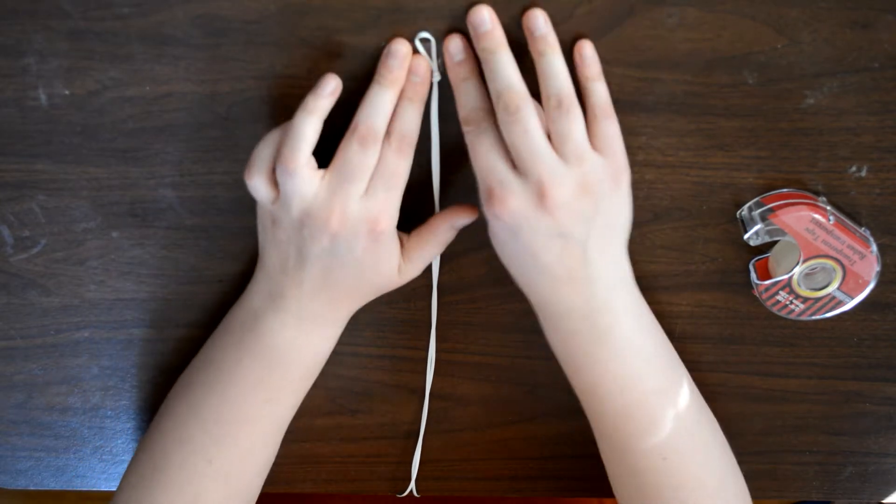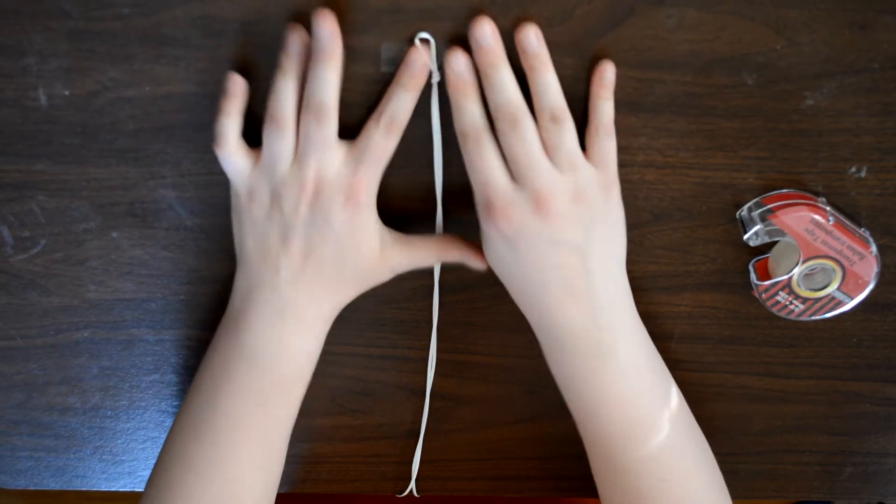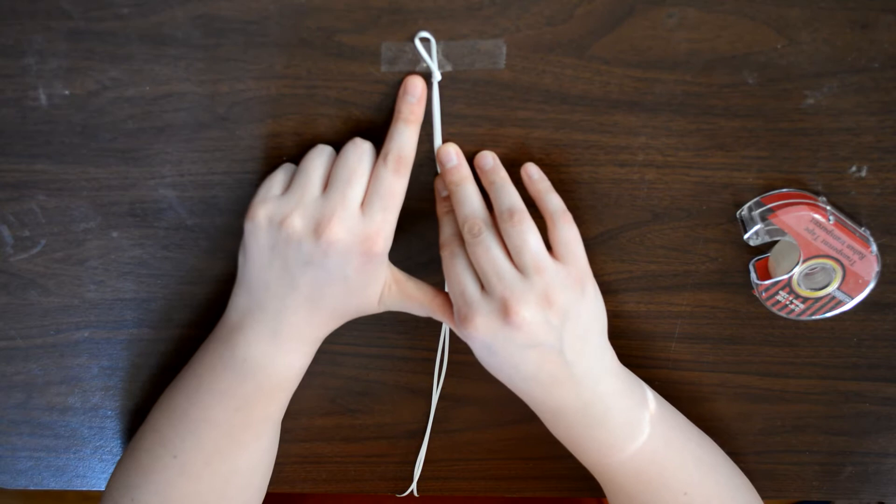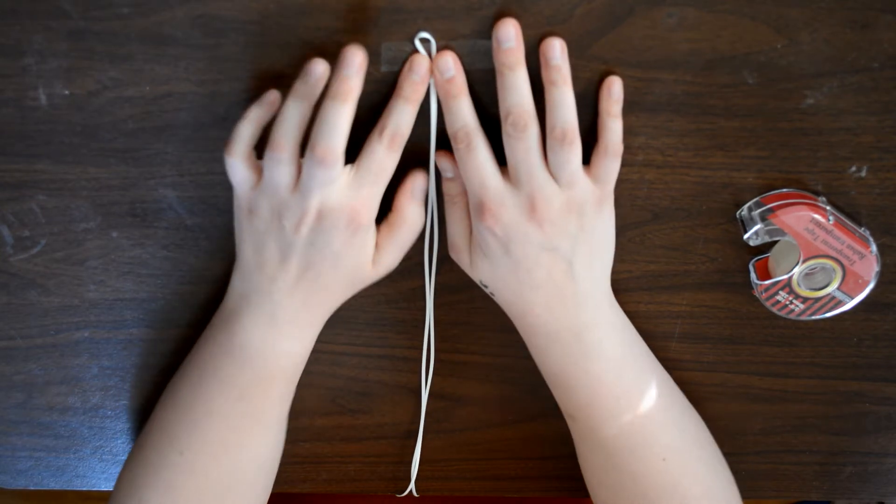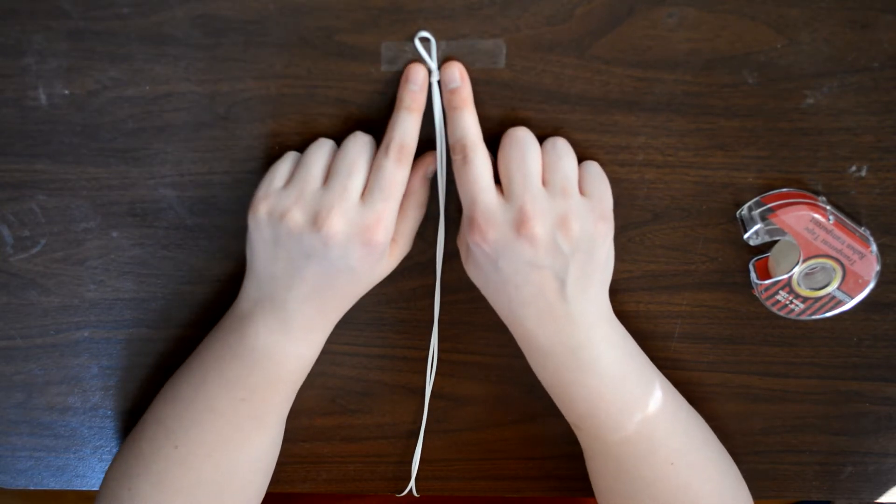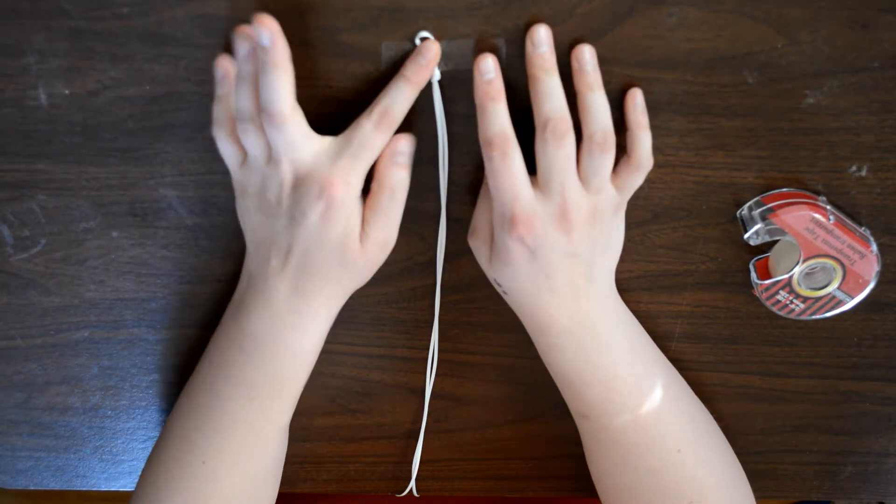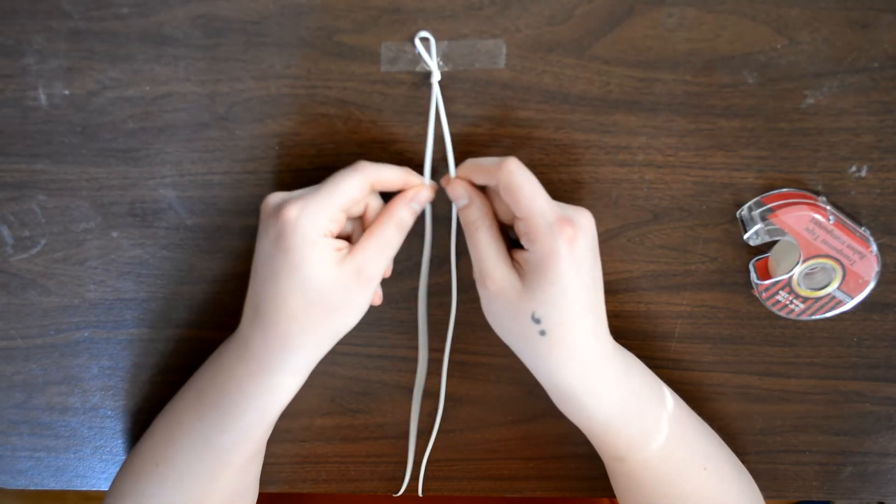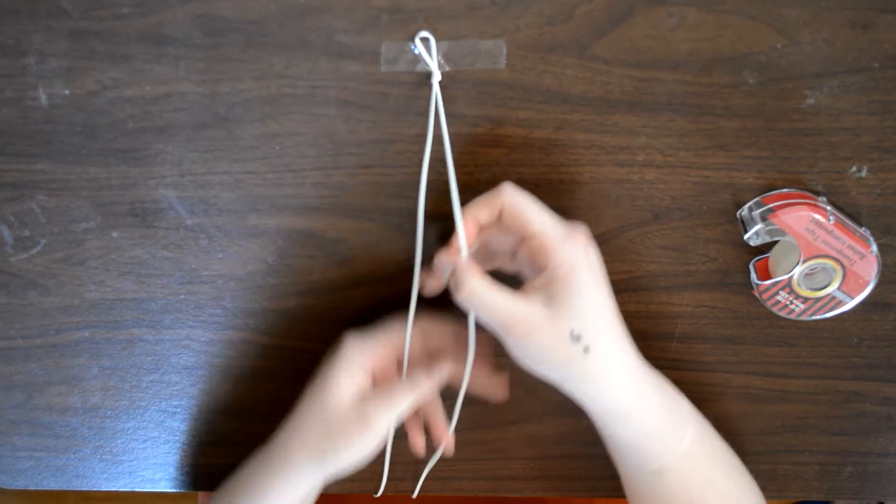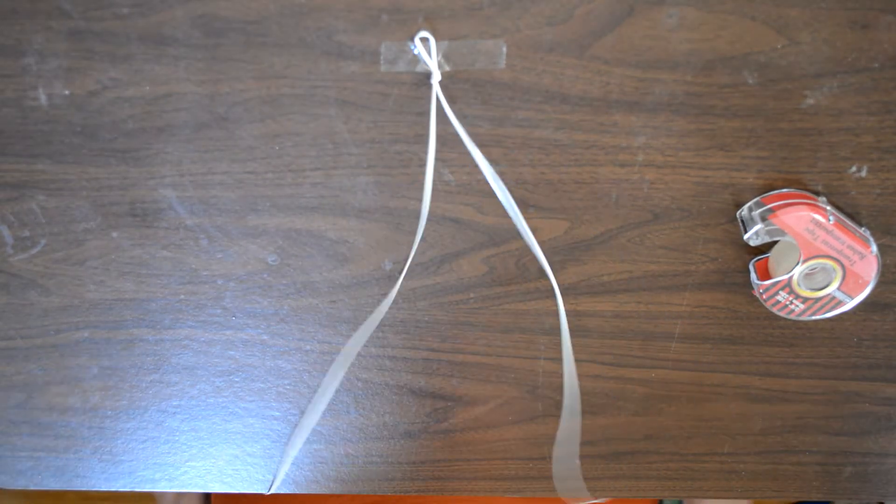Now what you want to do is you want to tie a loop in the top right in the middle. You can also add a keychain loop or a lanyard hook or anything like that. I'm just going to go with the standard loops so that I can reuse this cord for other tutorials.